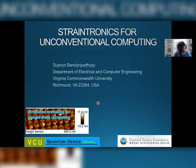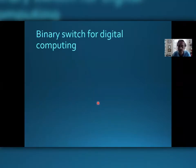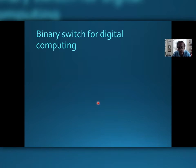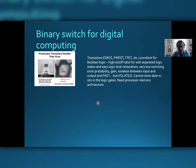Let me motivate this talk by first talking about a binary switch for digital computing. Anytime you are doing any kind of digital hardware processing, all you are dealing with basically is a binary switch which has two states — on and off — that encode the binary bits 0 and 1. The quintessential binary switch is of course the transistor, which has a lot of good qualities but it has one bad quality.